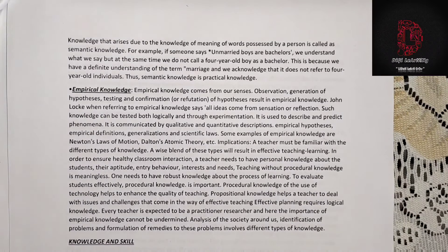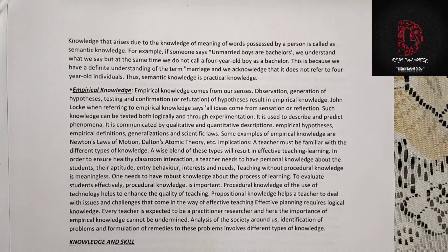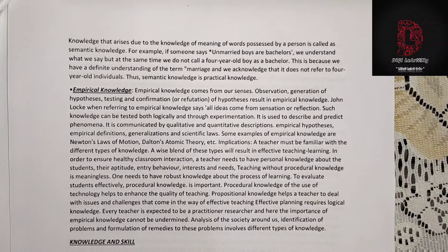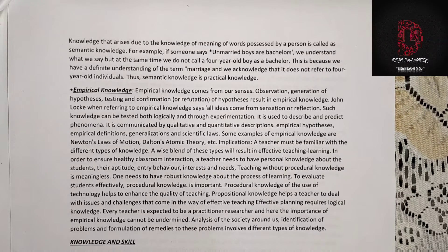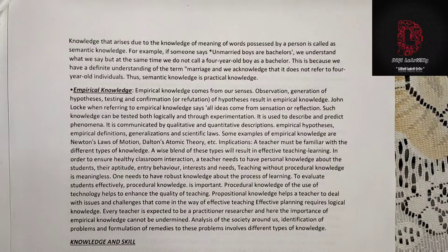The last type is empirical knowledge. Empirical knowledge comes from our senses — through observation, generation of hypothesis, and testing and confirmation or refutation of hypothesis. John Locke, when referring to empirical knowledge, says all ideas come from sensation or reflection. Such knowledge can be tested both logically and through experimentation. It is used to describe and predict phenomena, and is communicated through qualitative and quantitative descriptions, empirical definitions, generalizations, and scientific laws. Examples of empirical knowledge include Newton's laws of motion and Dalton's atomic theory.